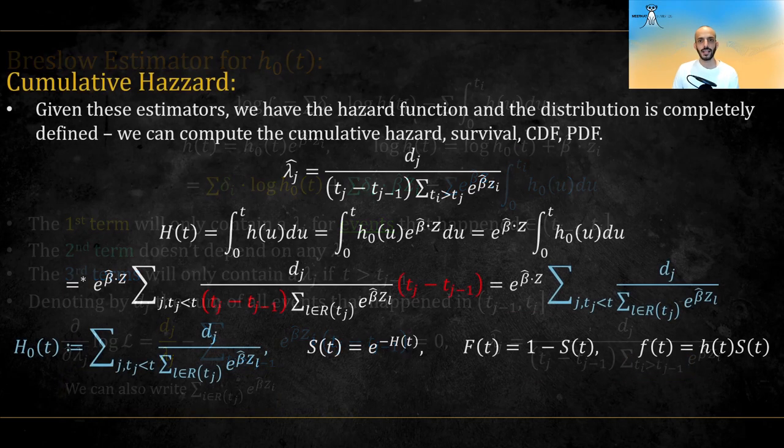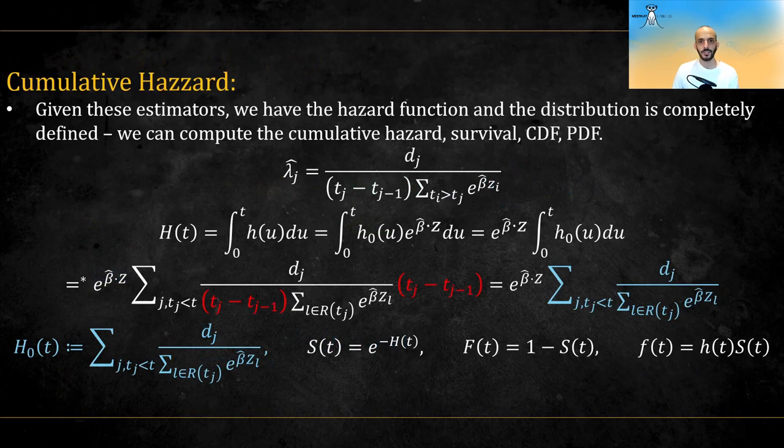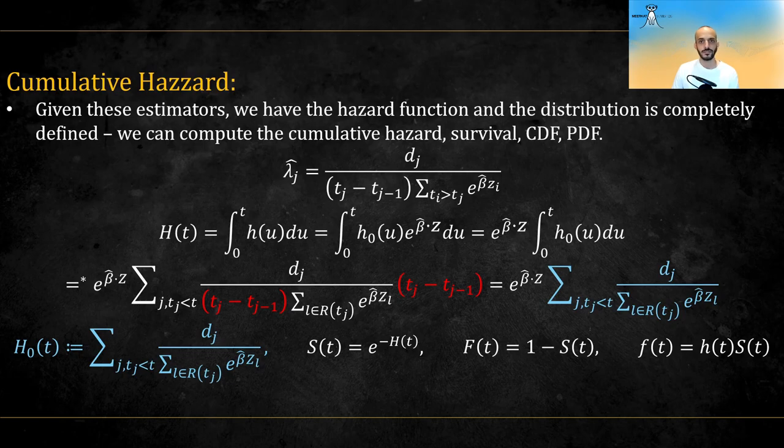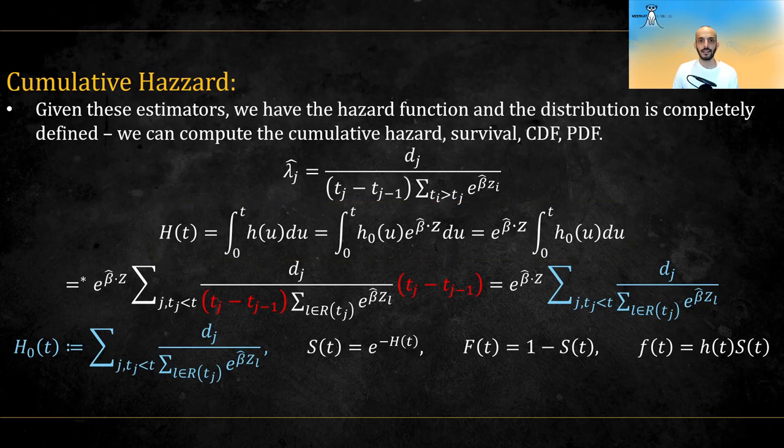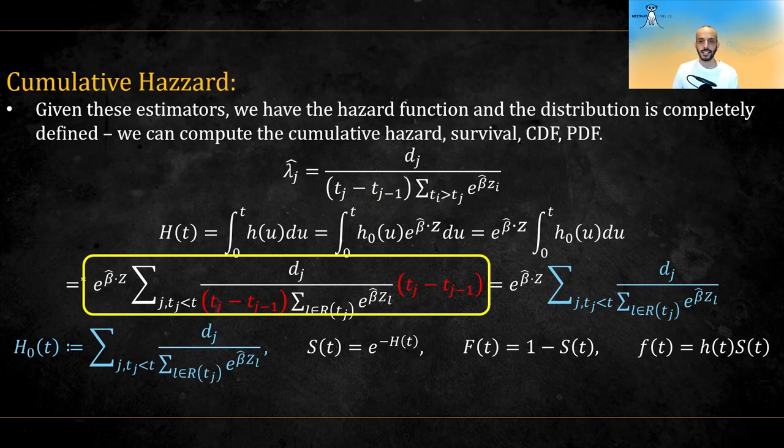Given these estimators, we have the hazard function and the distribution is now completely defined. We can compute the cumulative hazard, the survival, the CDF, or the PDF. Calculating the cumulative hazard for a given individual and time, we get this. Calculating the integral of the step function, we replace each step level with its estimator. And the integral becomes the sum of this level times the section it covers.